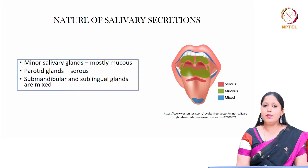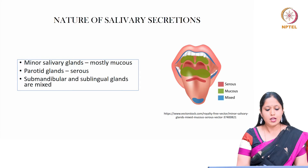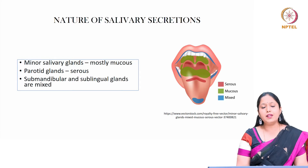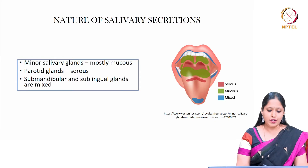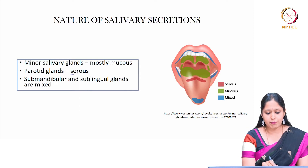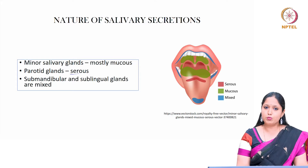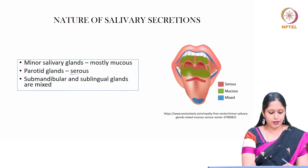Salivary secretion can be either serous, mucus, or mixed — that is, both serous and mucus. Minor salivary glands mostly produce mucus type saliva. The parotid gland always produces serous type saliva. Submandibular and sublingual glands produce mixed type saliva, that is both serous and mucus.